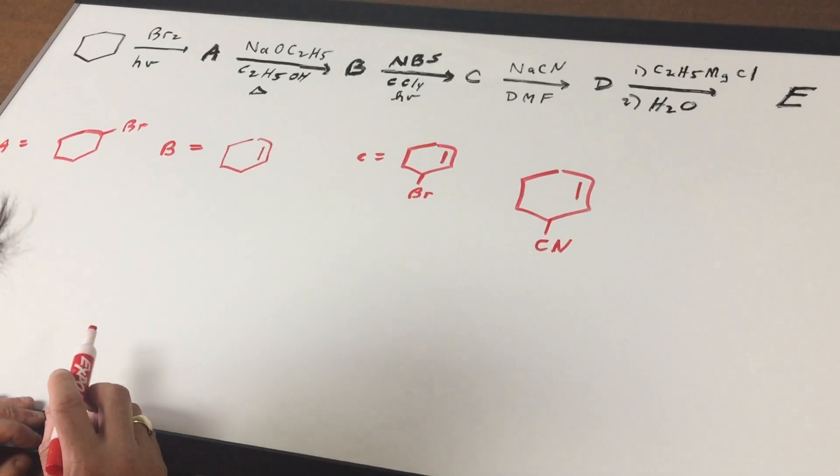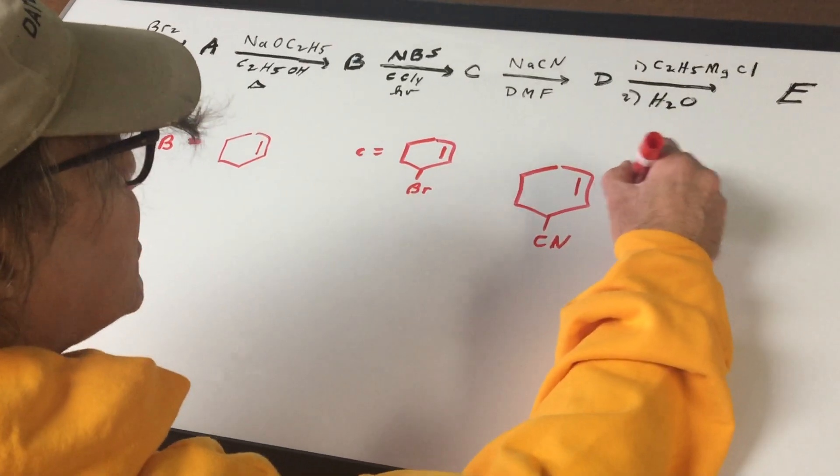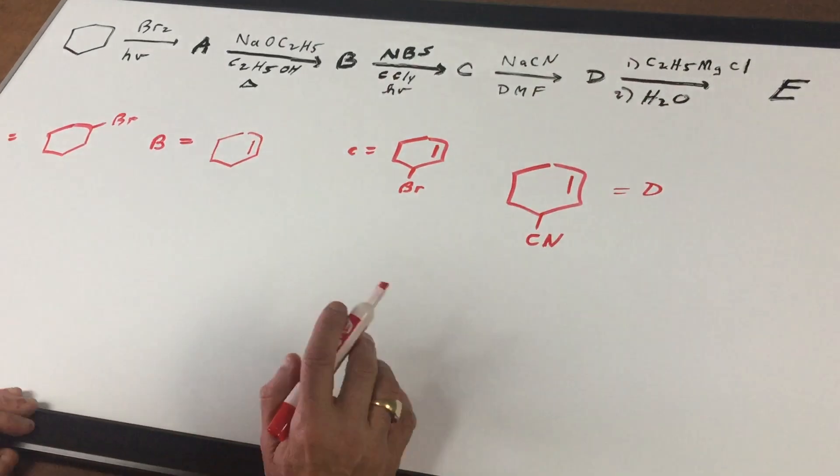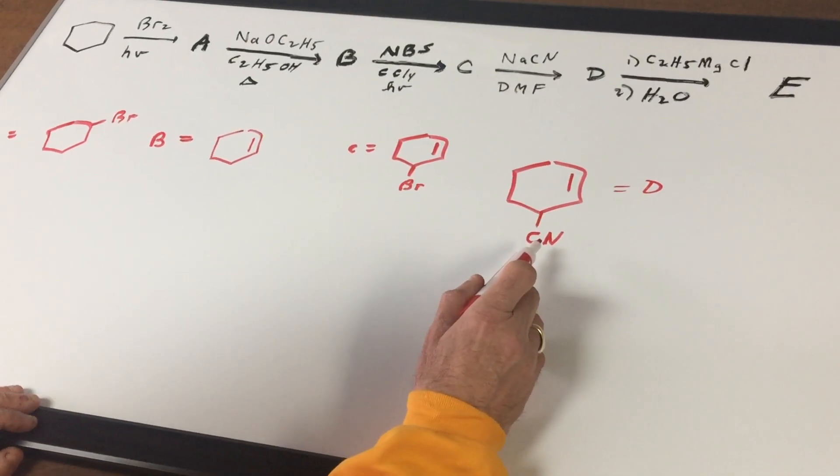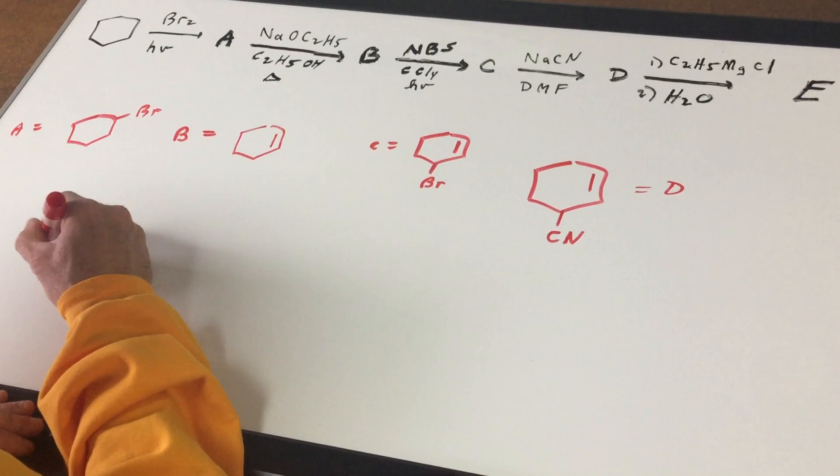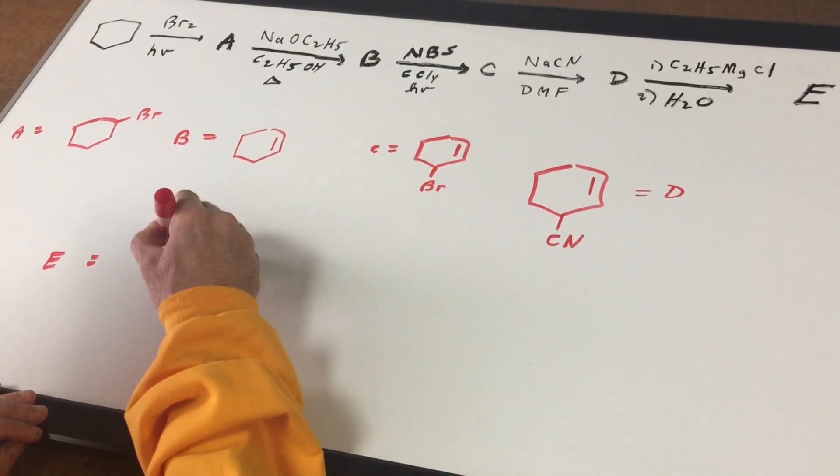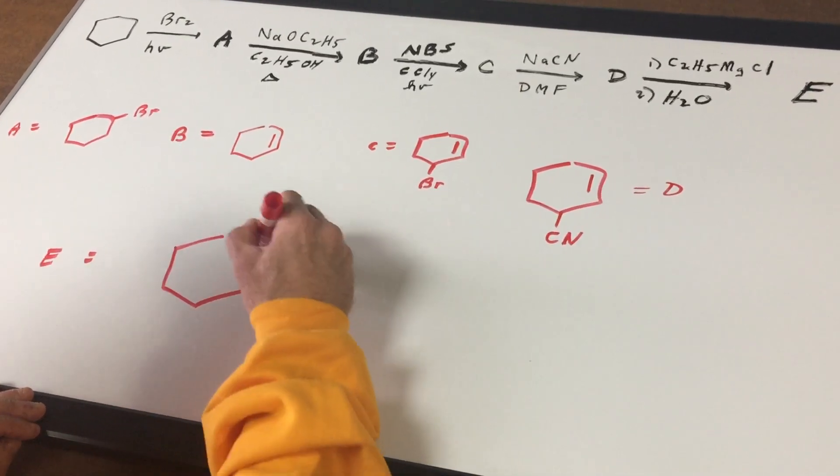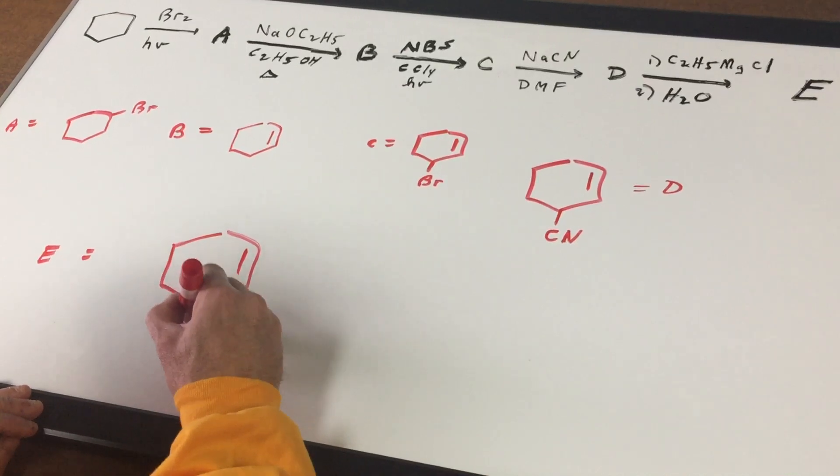Now, the last step I think is the trickiest. So this is D. Whenever you have a nitrile with a Grignard, we have a reaction like this in the destroyer. And for the grand finale, that's going to give us a ketone.